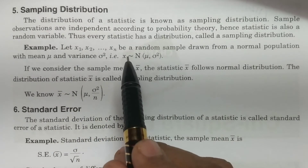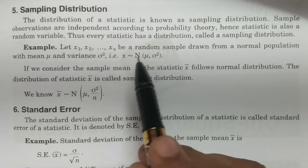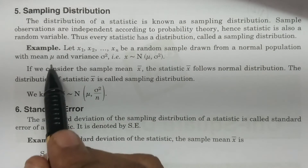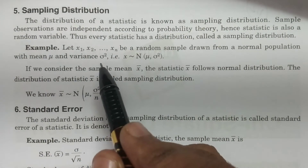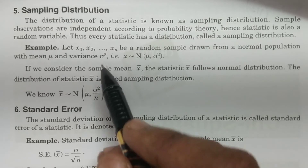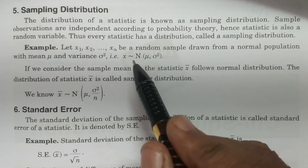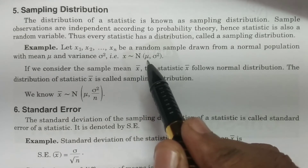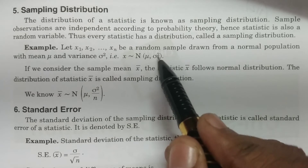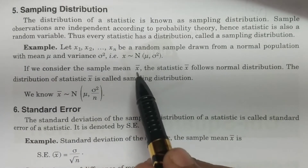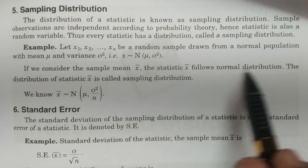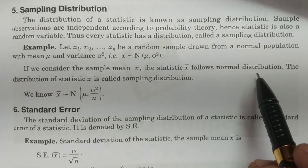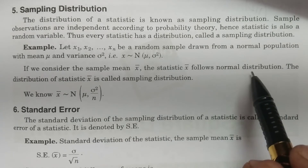Consider x₁, x₂, ..., xₙ as a random sample drawn from a normal population with mean μ and variance σ². This is the standard terminology: if x follows a normal distribution with mean μ and variance σ², then the sample mean x-bar is a statistic that also follows a normal distribution, based on the additive property of the normal distribution.